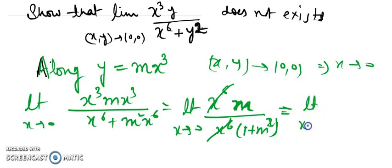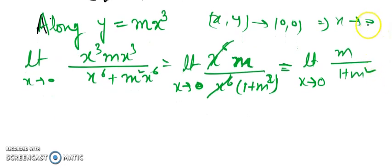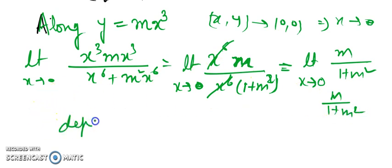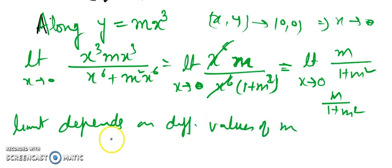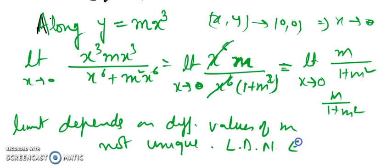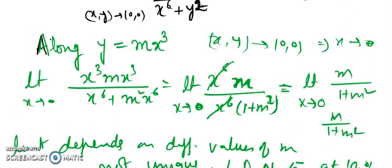Along y = mx³, as (x, y) → (0, 0), x tends to 0. Substituting: numerator becomes x³·(mx³) = mx⁶; denominator becomes x⁶ + m²x⁶ = x⁶(1 + m²). After cancelling x⁶, the expression becomes m/(1 + m²). The limit depends on m; for different values of m we get different limits. So the limit is not unique, meaning the limit does not exist at the origin.